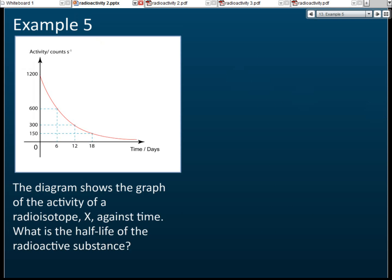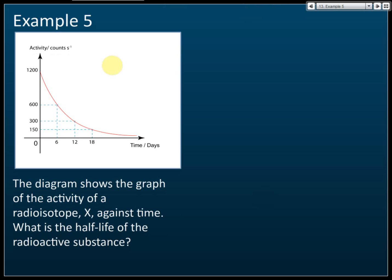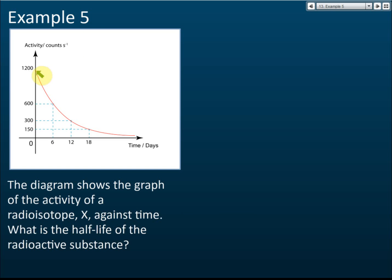This one is very simple. From here we can see that initially the activity is 1200, and it takes 6 days to reduce to 600. So 6 days is the half-life. Another 6 days reduced to 300, and another 6 days reduced to 150. So the half-life of the radioactive substance is 6 days—no calculations needed.